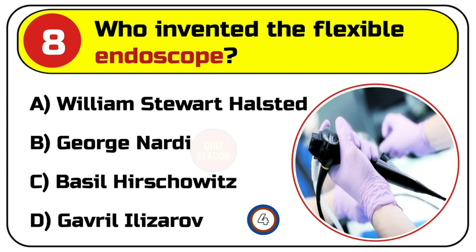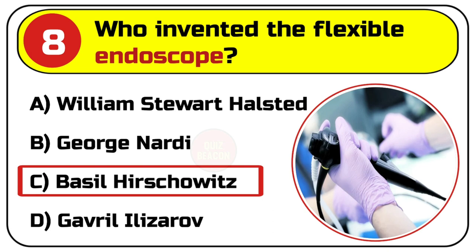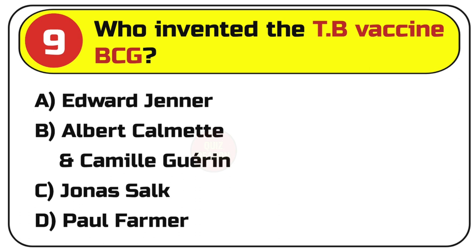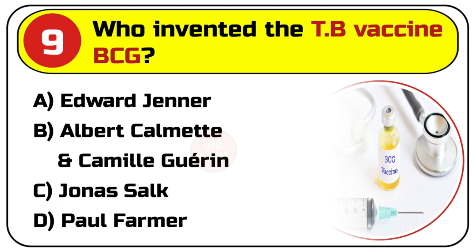Correct answer is D. Question number 9. Who invented the TB vaccine BCG? Options are: A. Edward Jenner, B. Albert Calmette and Camille Guérin, C. Jonas Salk, D. Paul Farmer.